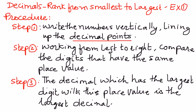Step number two: Working from left to right, compare the digits that have the same place value. Step number three is the decimal which has the largest digit with this place value is the largest decimal.